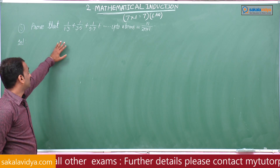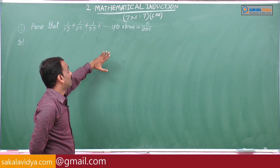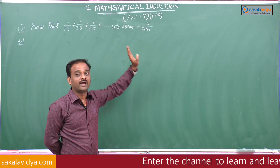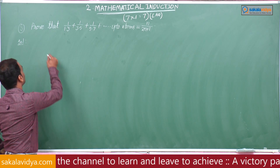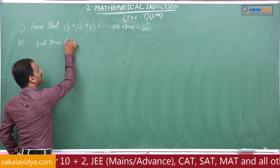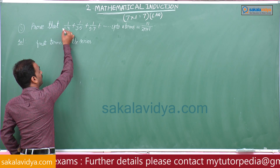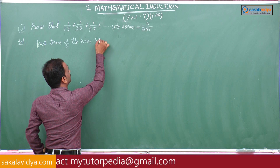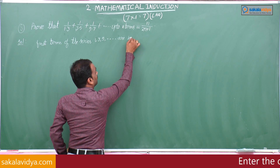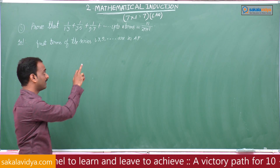If you observe, in each term there exist two terms: first term 1×3, second term 3×5, third term 5×7. So the nth term in the denominator must have two terms. First of all, we have to find the nth term of the given series. The first terms of the given series are 1, 3, 5, and so on, which are clearly in arithmetic progression.